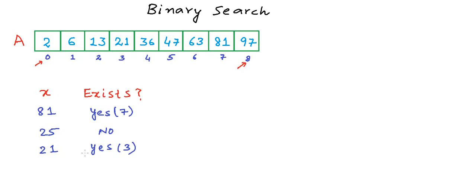Now what would be the logic to find out whether x exists in this array or not? One simplest approach is that we can scan the whole array to find the desired number. We start at index 0 and compare that element with x. If it is equal to x, then we are done. If not, we go to the next element, and we keep comparing until either we are finished with the array or we find the number. This approach will work irrespective of whether the array is sorted or not.